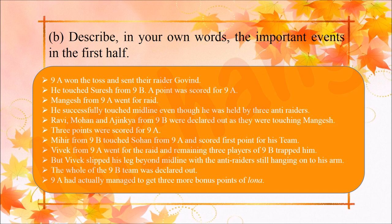Vivek from 9A went for a raid and the remaining 3 players of 9B tried to trap him. But Vivek slipped his leg beyond the midline with the anti-raiders still hanging on his arm, and touched the middle line. The whole of 9B team was declared out, and 9A managed to get 3 more bonus points — a Lona.